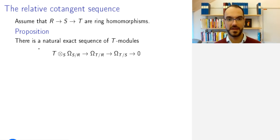The statement is as follows that there is a natural exact sequence of the following T-modules. Let's start by looking at the central portion where we have the module of R-linear Kähler differentials over T.